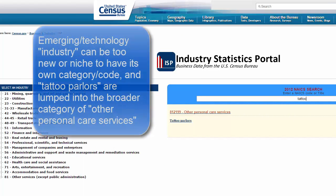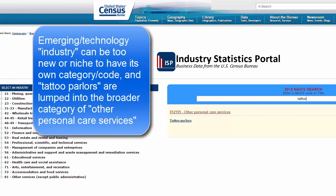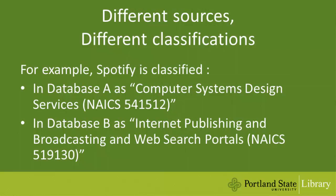While classification systems are useful, sometimes they can be too broad if you're researching an emerging or niche industry. Furthermore, since many databases have their own classification systems and associated terminology, you will need to figure out what an industry is called in a particular database.